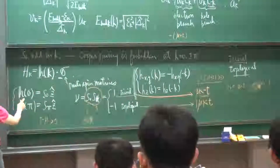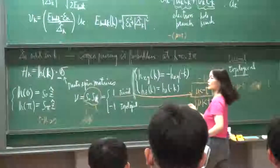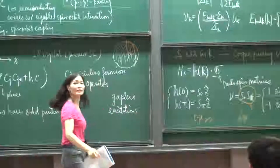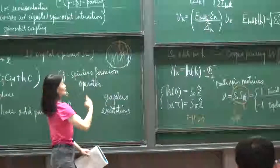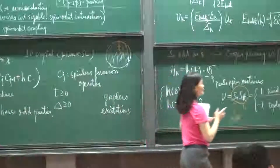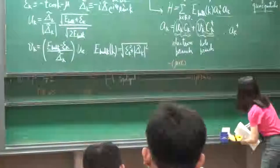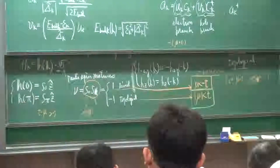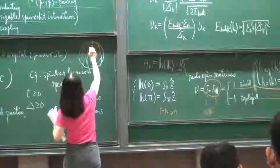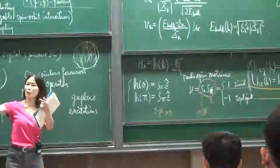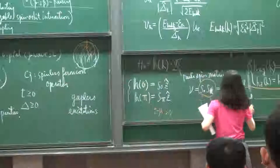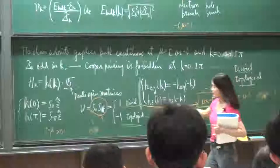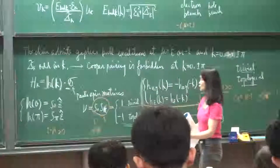What does that mean? That means when I have this condition, I go from 0 to π — this thing goes around and then goes back. So you sweep a vector along the z-axis and then sweep around and go back. So this is a trivial loop. On the other hand, if you go with the other condition, it will go from north pole to south pole — an untrivial passage. It doesn't go back to itself. So this is called topological.